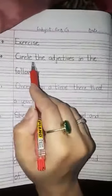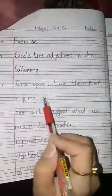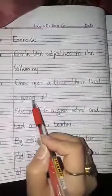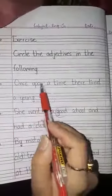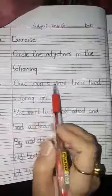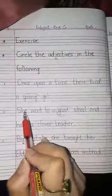Now come towards the exercise. Write 'Exercise: Circle the adjectives in the following.' In this exercise you have to circle all the adjectives in the following sentences. Sentence number one is: 'Once upon a time there lived a young girl.' In this sentence you have to circle 'young' because it is giving you some information or details related to that girl.